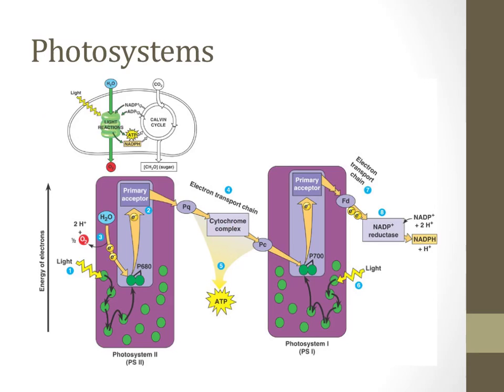Photosystem 2 is actually the first to occur and works by splitting a water molecule into oxygen gas and protons used for the production of ATP in an electron transport chain.